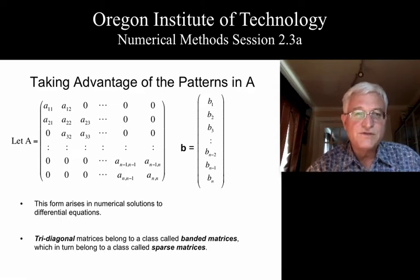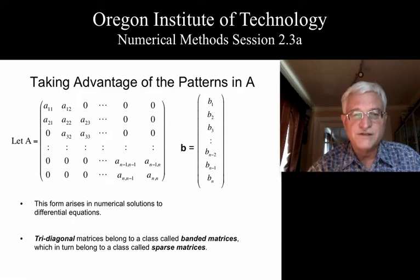The tridiagonal systems are a special case of banded matrices, where you could have maybe five diagonals or seven or more, and that whole subject belongs to a class of matrices that we call sparse matrices. That just means there's lots of zeros in the matrix.